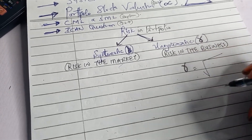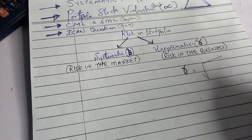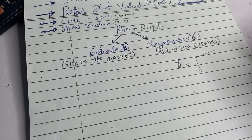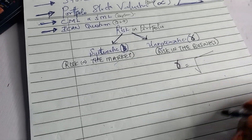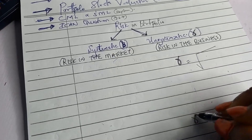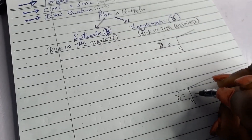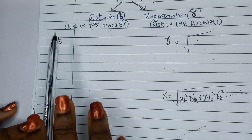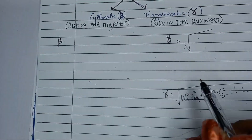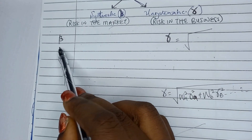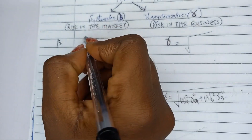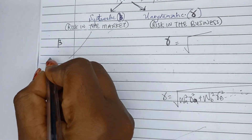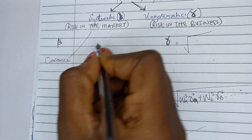We are done with unsystematic risk, which is represented by standard deviation. I gave you the formulas for calculating unsystematic risk in a one-asset portfolio and also for a two-asset portfolio. Systematic risk is calculated using a specific formula, and you always calculate it from the approach of covariance.